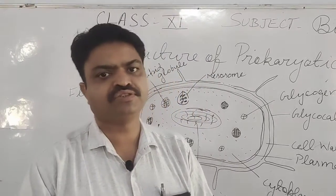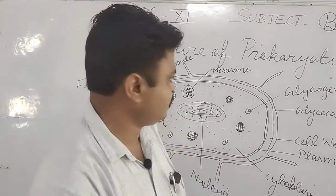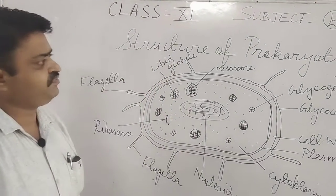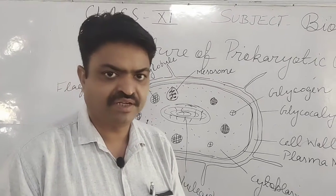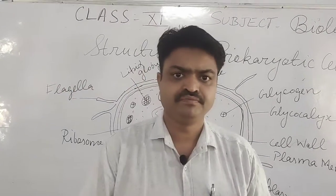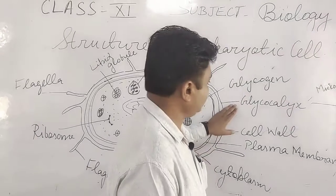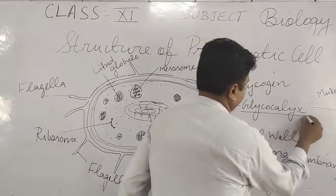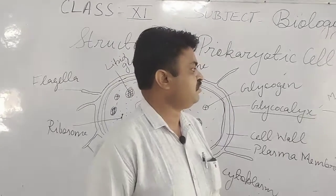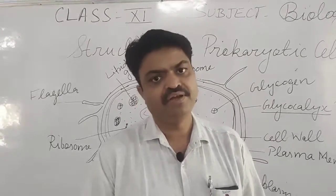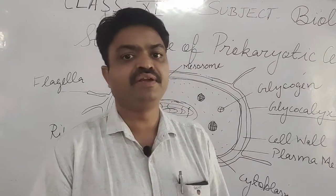Now we will discuss about the structure of the prokaryotic cell, which is found in bacteria. The main structure found in the prokaryotic cell is its outer covering. In the outer covering of this cell, there are three layers. The first layer found around the bacterial cell is glycocalyx. This glycocalyx is made up of mucous or polysaccharide — it is a protective layer found around the bacterial cell.